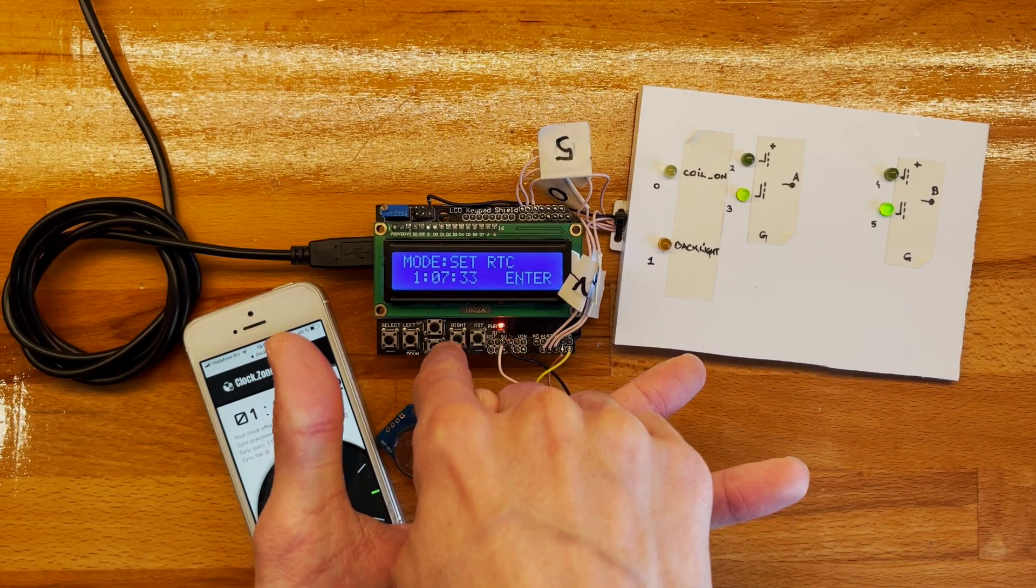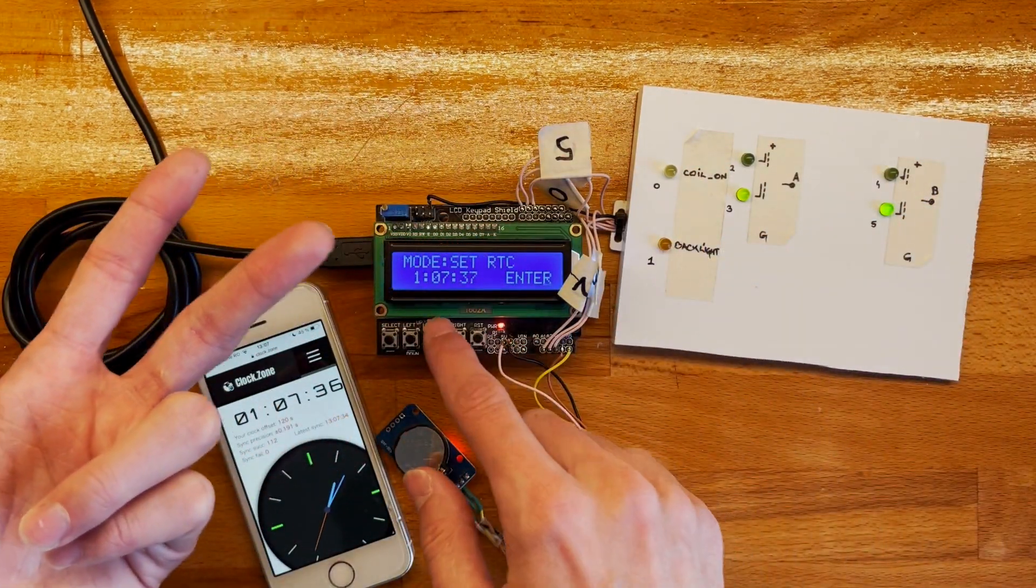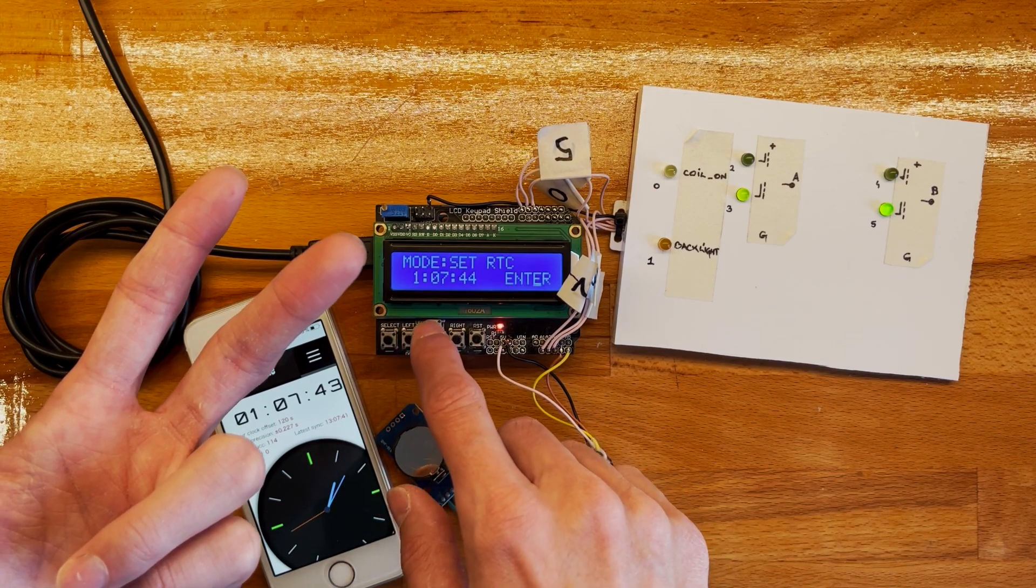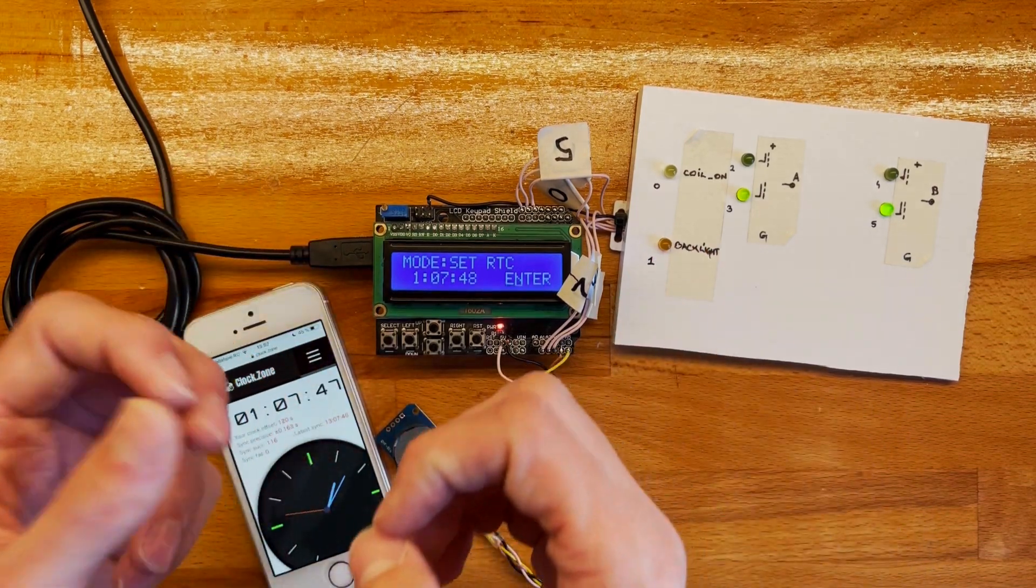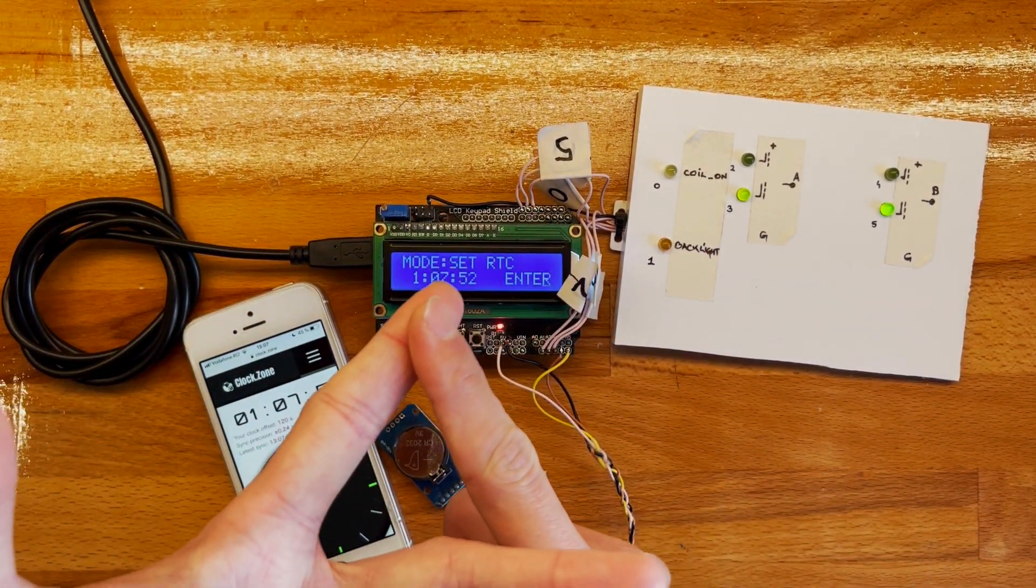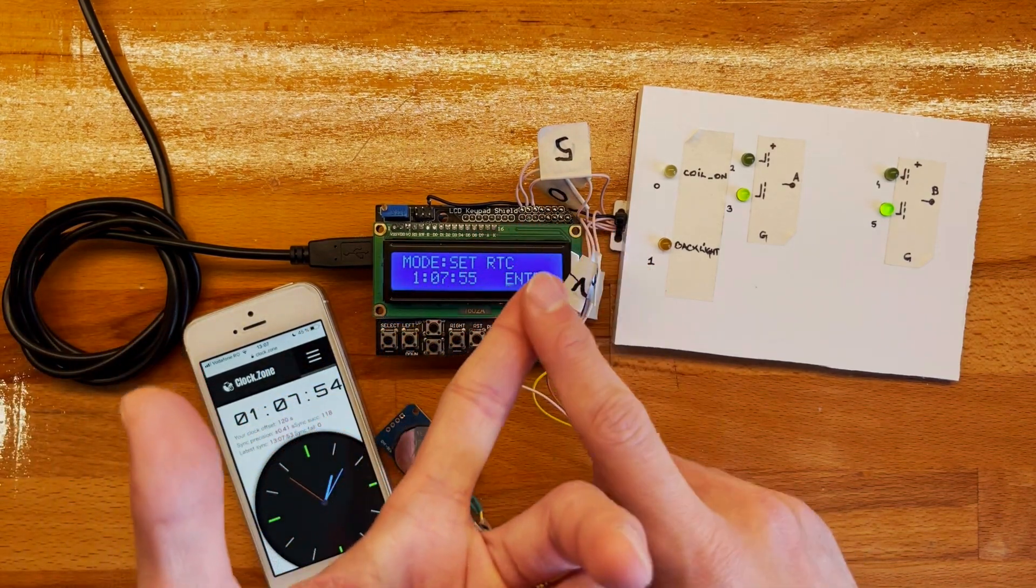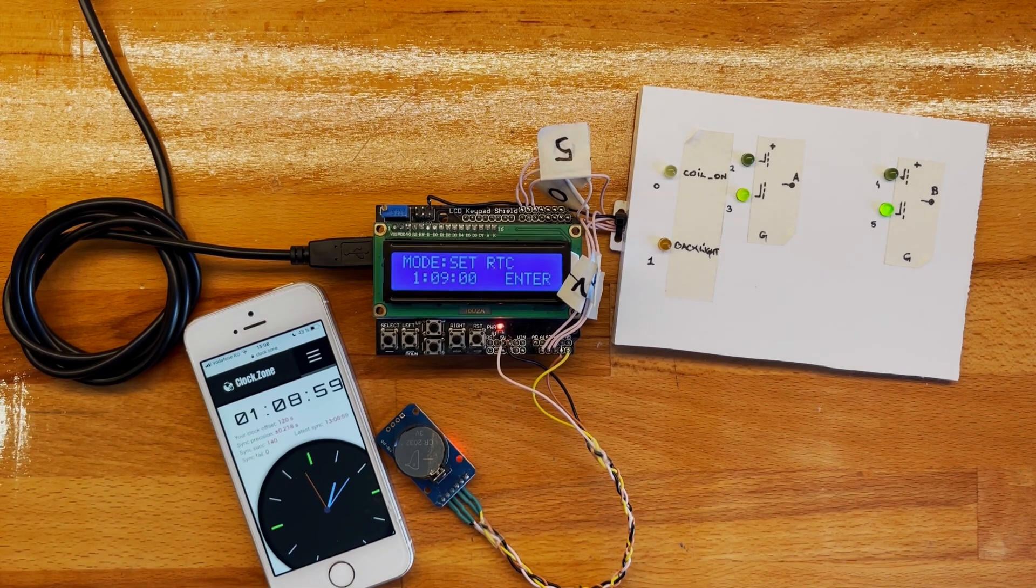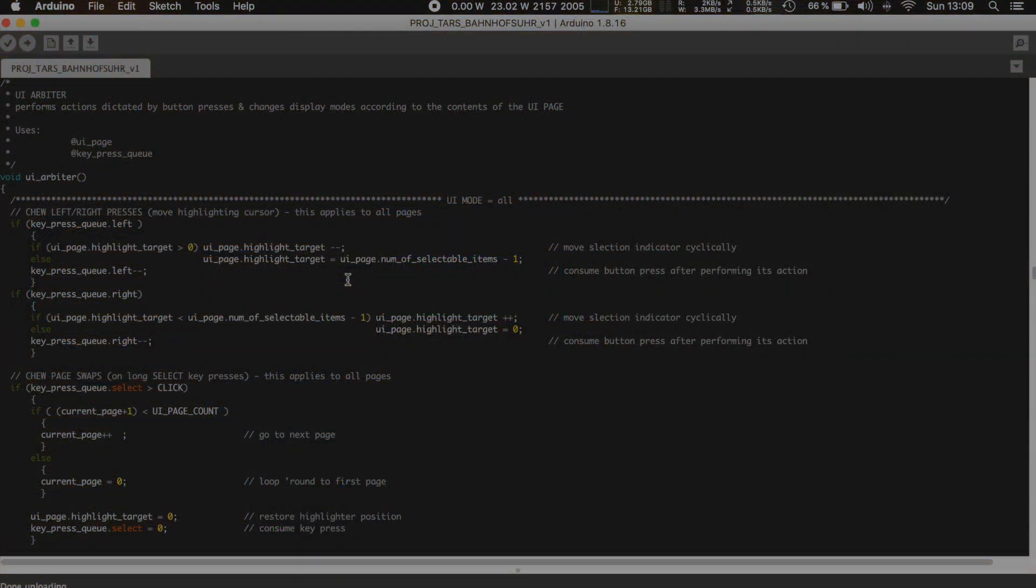I've split the entire UI into three parts. One is the button reader which all it does is read the buttons and put them in a queue. Every button has its own queue. A queue is basically just a variable for each button. If you press it twice the button reader will add to that button's variable. Then you come to the UI.